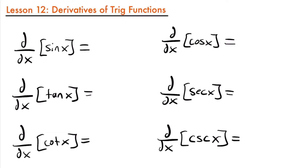We'll start with sine x — the derivative of sine x is cosine x. Whenever you take the derivative of the sine function, you get cosine x. And the derivative of cosine x is negative sine x. These two derivatives could be proven using the limit definition from a previous lesson, but you're not expected to know those proofs. For now, just know that the derivative of sine is cosine, and the derivative of cosine is negative sine.